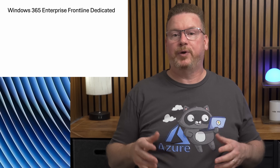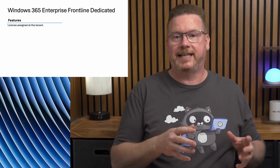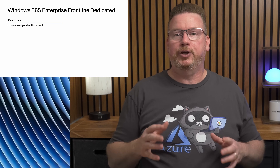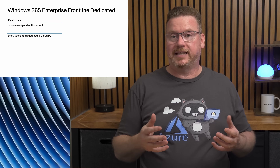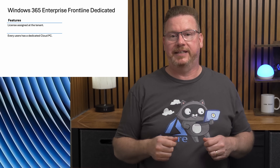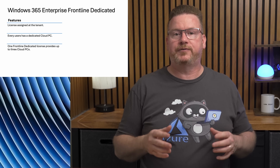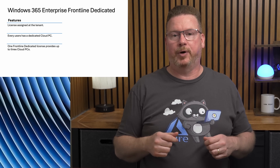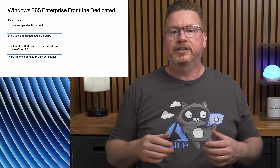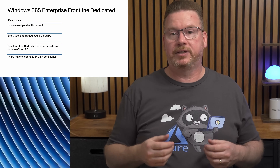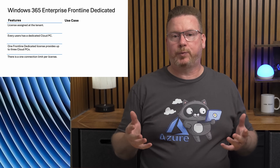Next, let's review Windows 365 Enterprise Frontline in dedicated mode. With this option, we assign the license at the tenant level — not to specific users. Users get access by group membership in the provisioning policy. Just like the basic Enterprise license, each user gets a dedicated cloud PC — an independent, non-shared PC. We get three cloud PCs for each one Frontline license in dedicated mode.